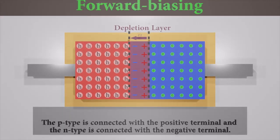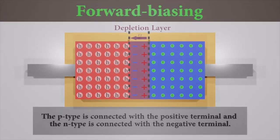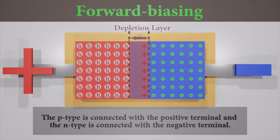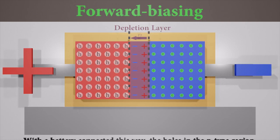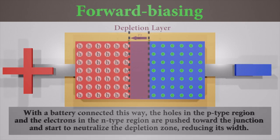Right now, let's talk about forward biasing. In forward bias configuration, the p-type is connected with the positive terminal and the n-type is connected with the negative terminal. The positive potential applied to the p-type material attracts the electrons in the depletion layer, while the negative potential applied to the n-type material repels the electrons. This causes neutralization of the depletion layer, reducing its width.